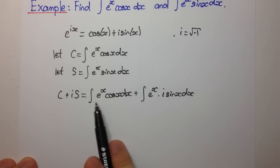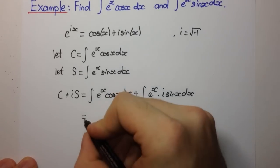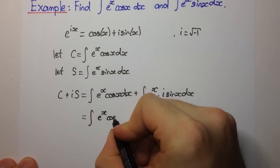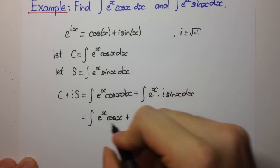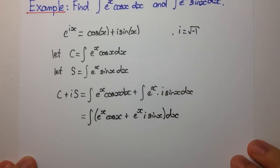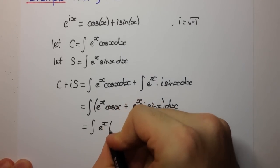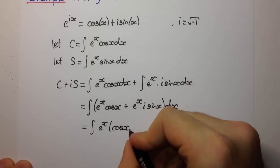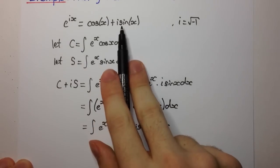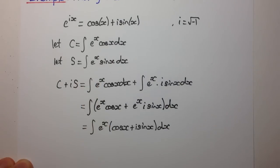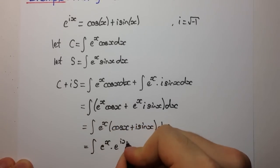A property of integrals is that when we have a sum of two integrals we can combine them into one integral. So we get the integral of e to the x·cos(x) plus e to the x times i·sin(x) dx. We can factor out an e to the x, giving the integral of e to the x times (cos(x) plus i·sin(x)) dx. Now we can apply Euler's theorem — cos(x) plus i·sin(x) equals e to the i·x — so we have the integral of e to the x times e to the i·x dx.